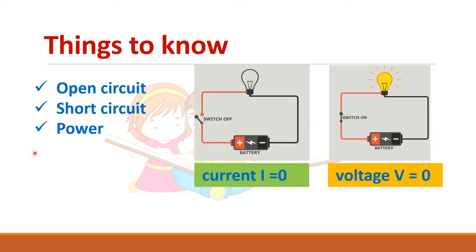So what is power? Power is equal to V×I. In an open circuit, current should be zero. In a short circuit, voltage should be zero, and power is equal to V×I.